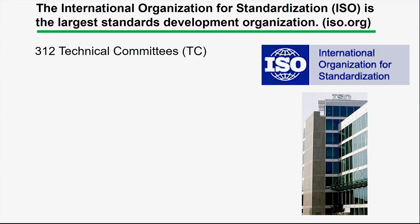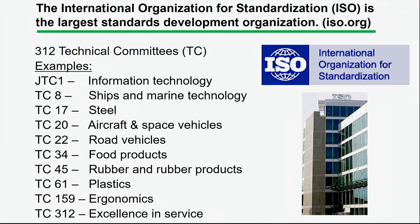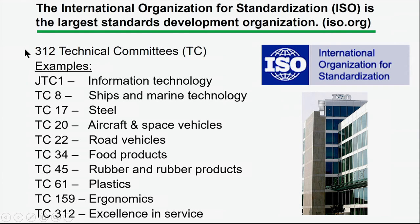Here are some examples of ISO committees to give you a sense of their scope. One of the first formed was a joint technical committee for information technology. Technical Committee 8 has to do with ships; steel; aircraft. TC22 is road vehicles — one I'll talk about later. There's also food products, rubber and rubber products, plastics. Of interest to us is TC159, ergonomics. And TC312 covers excellence in service. The committees have gone over time from fundamental technologies and products toward increasing specialization as committees grow in number.